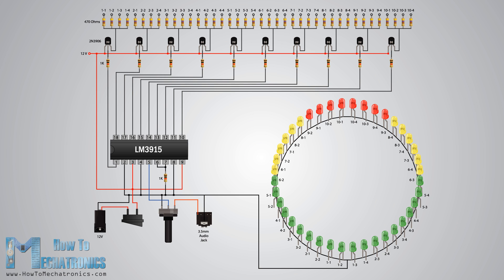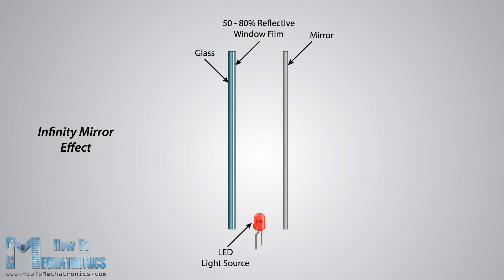Okay, now we are ready to move on and start building the infinity mirror. The point of the infinity mirror is that the LED or light source needs to be placed between a mirror and a glass on which is attached a 50 to 80% reflective window film.